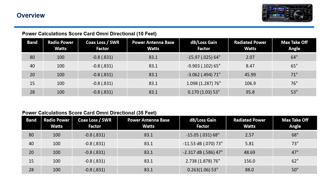I'm estimating about a minus 3 dB at 10 feet, and at 35 feet only about minus 2.3 dB. On 20 meters I'm pushing roughly about 48 watts. On 40 meters I'm roughly pushing about 6 watts. And on 15 meters, things change — I'm able to pick up some gain. I'm getting about 2.7 dB gain, which almost doubles the power, getting it up to about 156 watts equivalent. On 28 meters it's pretty much unity gain, about 0.263 dB.